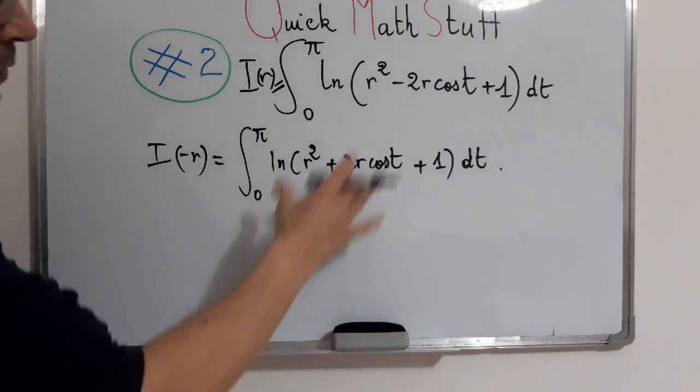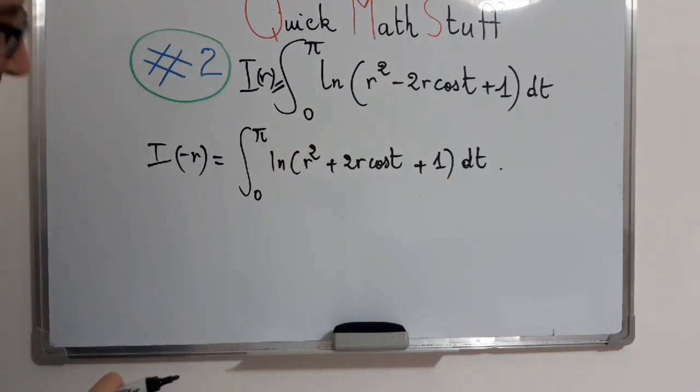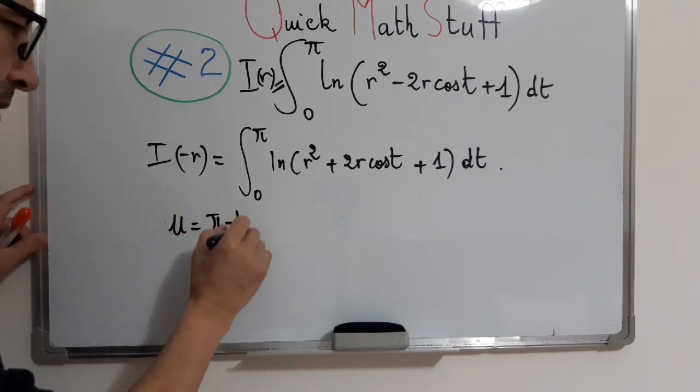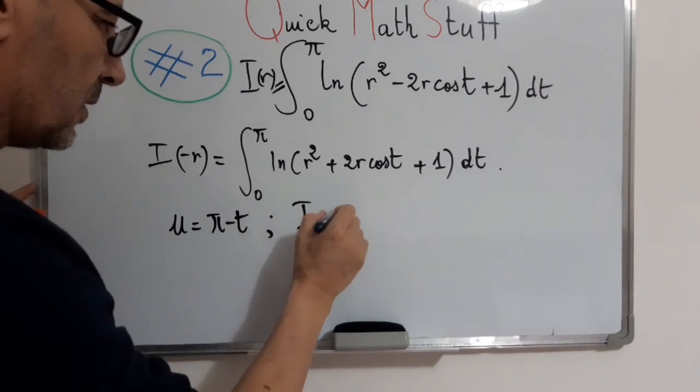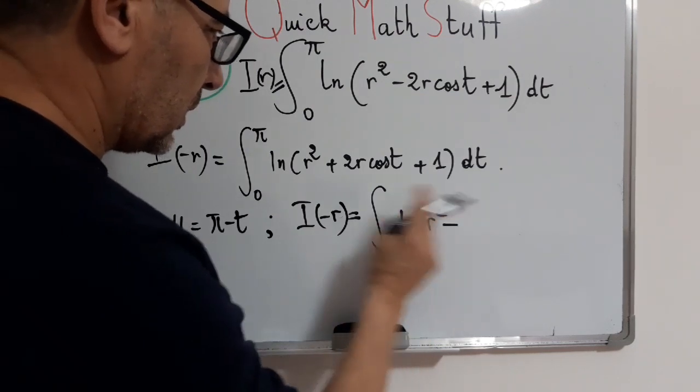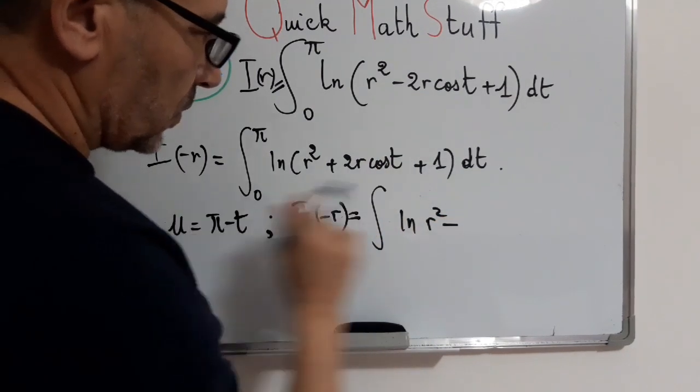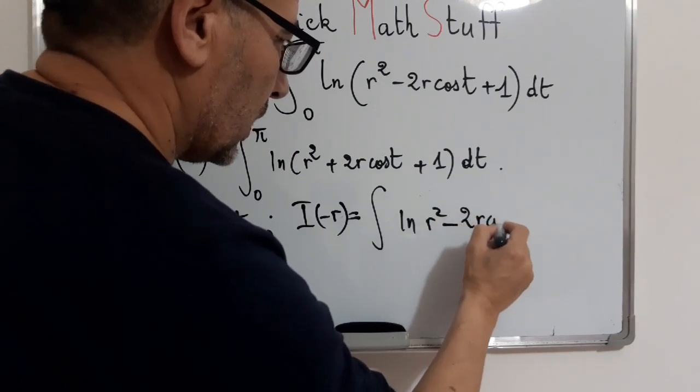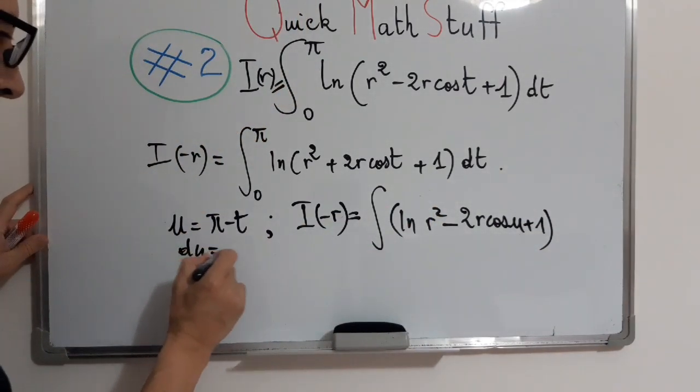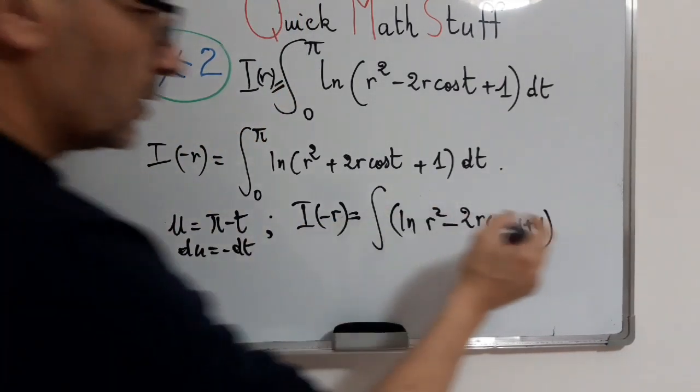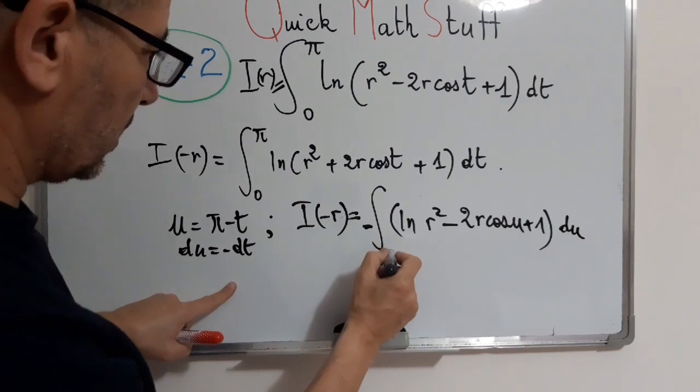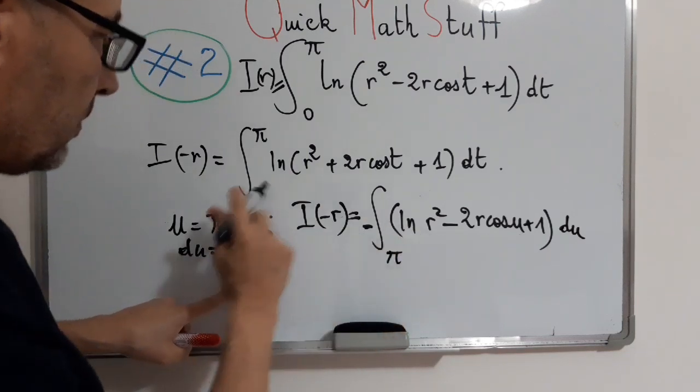Surely you have all seen that the convenient variable change is u equals π minus t. So this integral will be equal to ln of r squared minus 2r cosine u plus 1, and because du equals minus dt, we obtain minus du. The bounds become here π and here 0.